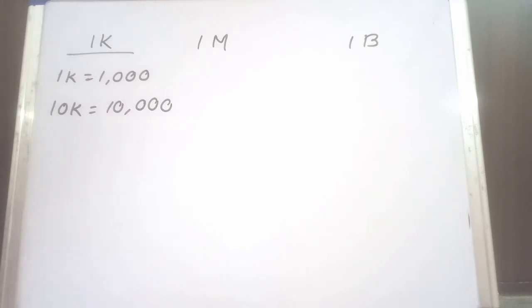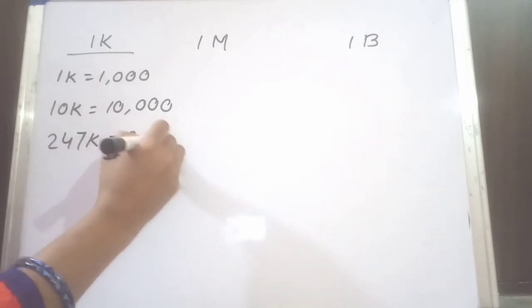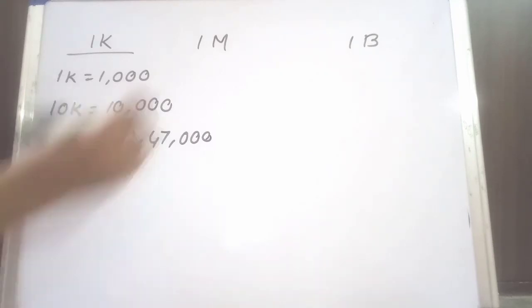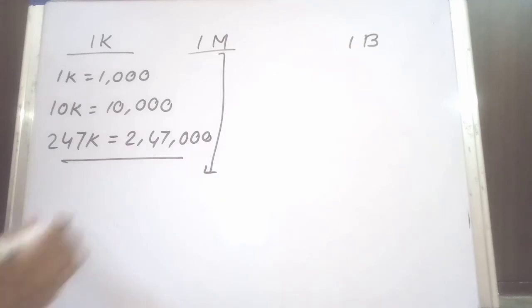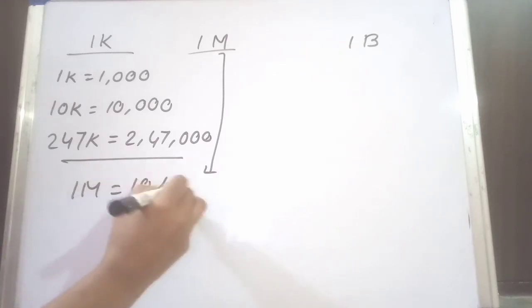in 247K views or 37K subscribers. So 247K means 2,47,000. Now, 1 million. 1 million means 10 lakhs.